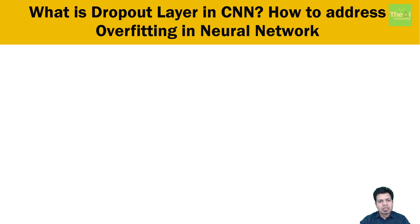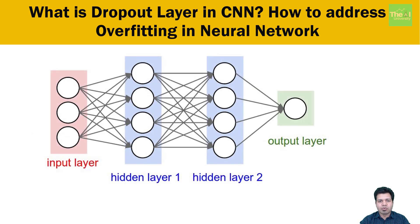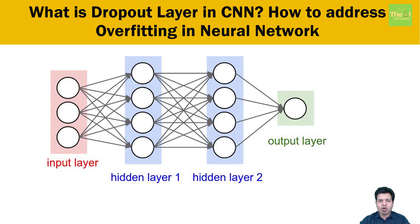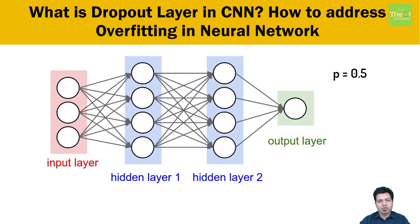Let's see how dropout works. Consider a neural network with one input layer, two hidden layers, and one output layer, all interconnected. We are planning to apply dropout in the two hidden layers only. First, we pick the probability of dropout — the dropout rate — for these neurons or activations. We generally take that probability as 0.5, because 0.5 is somewhat closer to the optimal value. The dropout rate is denoted by p.